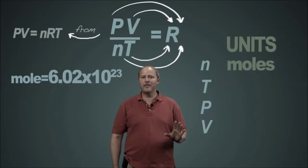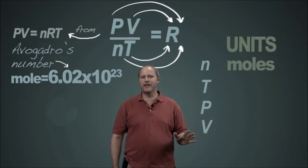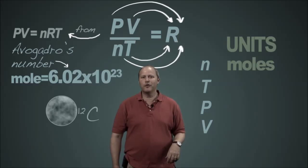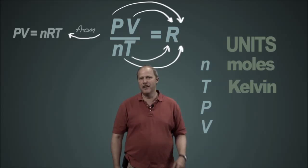Almost universally in chemistry we stick to the same value for units of moles. And we've agreed on what the definition of Avogadro's number is. And a mole is the number of particles that are in 12 grams of carbon. For temperature we're always going to use absolute temperature. And we're going to stick with units of Kelvin.